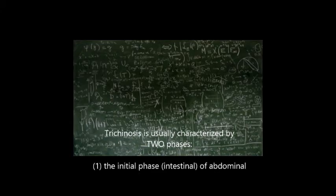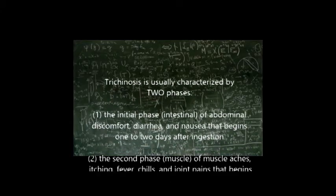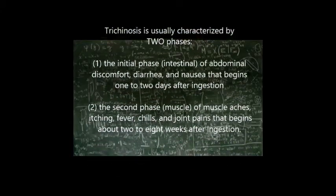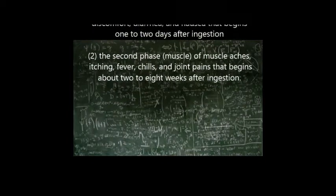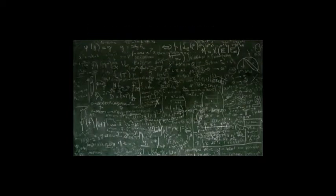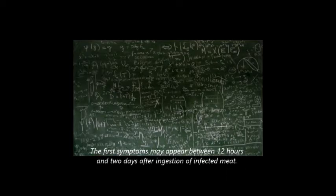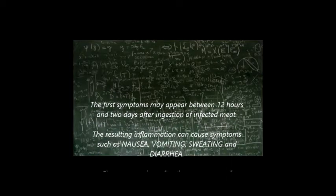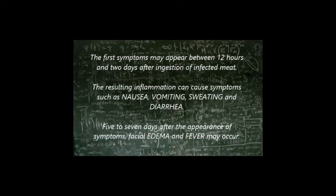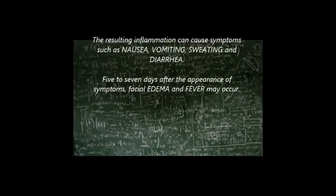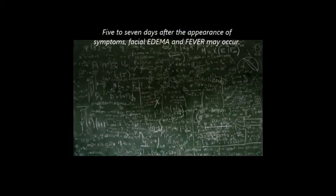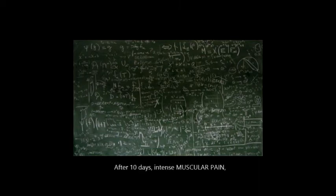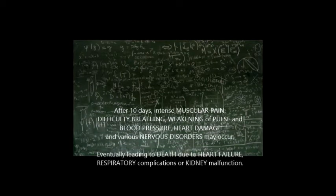Trichinosis is characterized by two phases. The initial phase begins one to two days after ingestion. The second phase begins two to eight weeks after ingestion. The first symptoms may appear between 12 hours to two days and include nausea, vomiting, sweating, and diarrhea. Fever and edema may also occur. After ten days, intense muscle pain, difficulty breathing, and various nervous disorders may occur. This could lead to death due to heart failure, kidney malfunction, or respiratory complications.